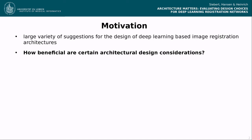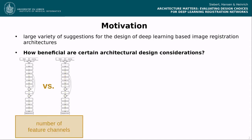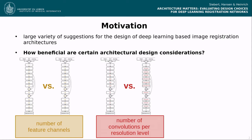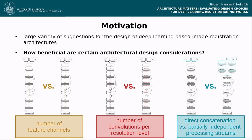We take a closer look at the impact of some basic network design choices in terms of the number of feature channels, the number of convolutions per resolution level, and the differences between partially independent processing streams for fixed and moving images versus direct concatenation of input scans. We want to examine the impact of different architectural design ideas on registration performance in order to finally propose an architecture for abdominal CT registration that combines the most convincing considerations examined.